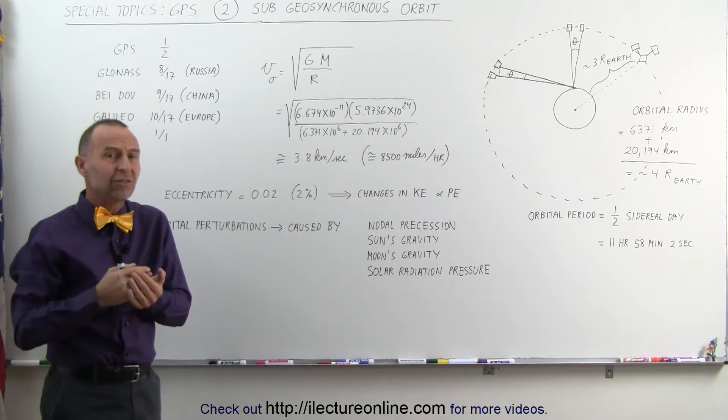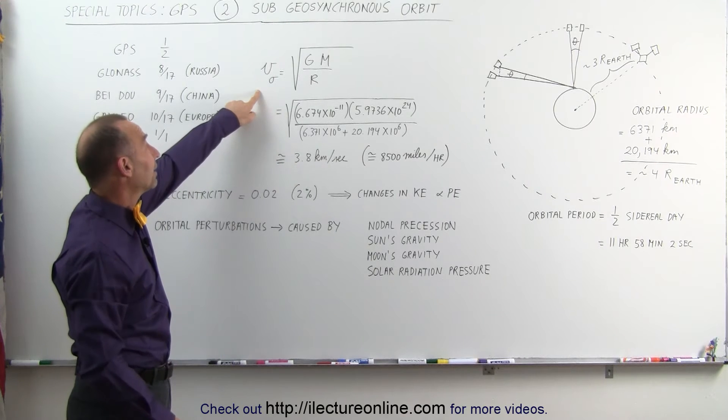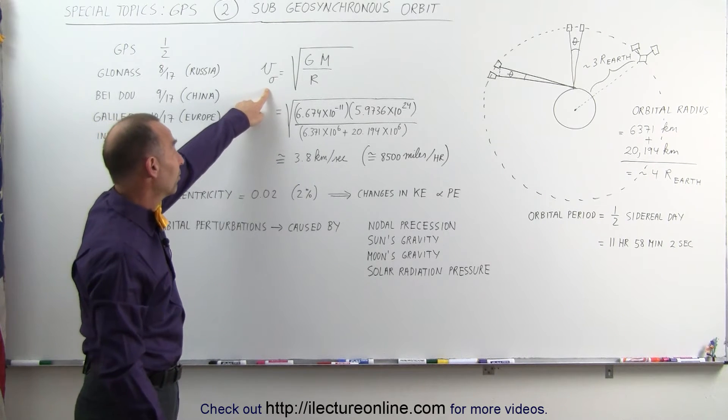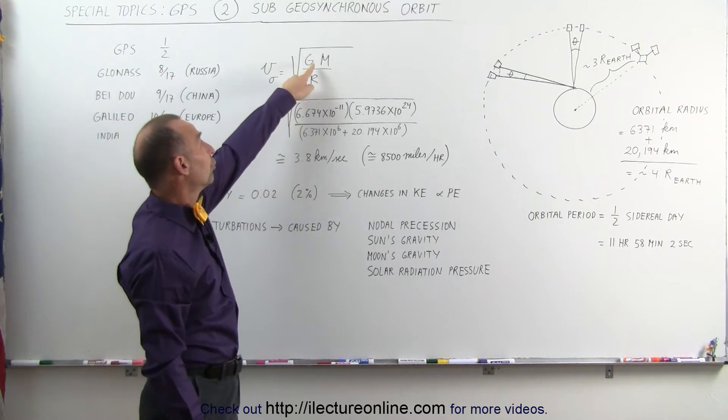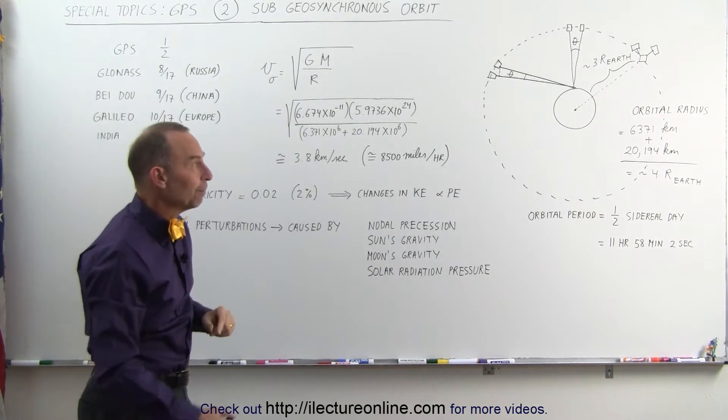What that means is the speed at which the satellites travel around the Earth can be calculated by this equation. The orbital velocity is equal to the square root of the universal gravitational constant, the mass of the Earth, and the radius of the orbit.